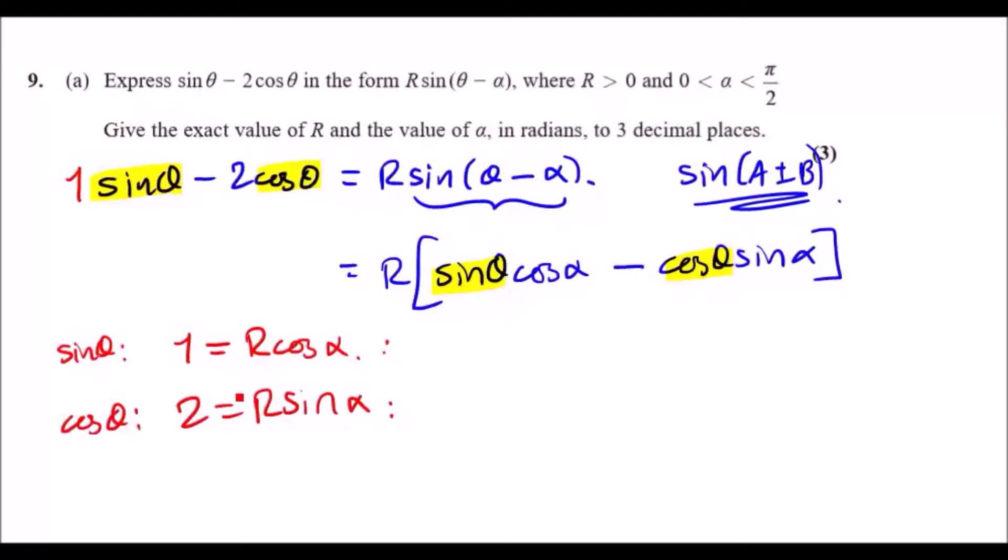Now to work out R and α, let's make everything to the usual SOH CAH TOA form, which is making sin α the subject and cos α the subject. We're going to have cos α equals 1/R and sin α equals 2/R.